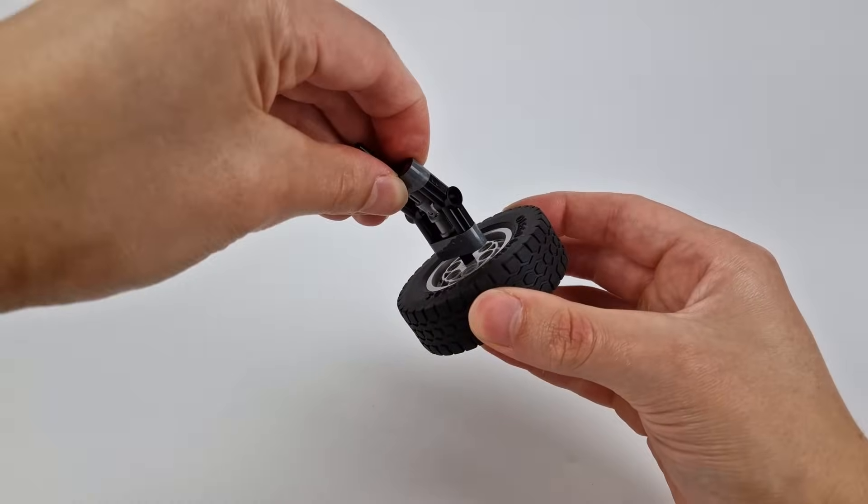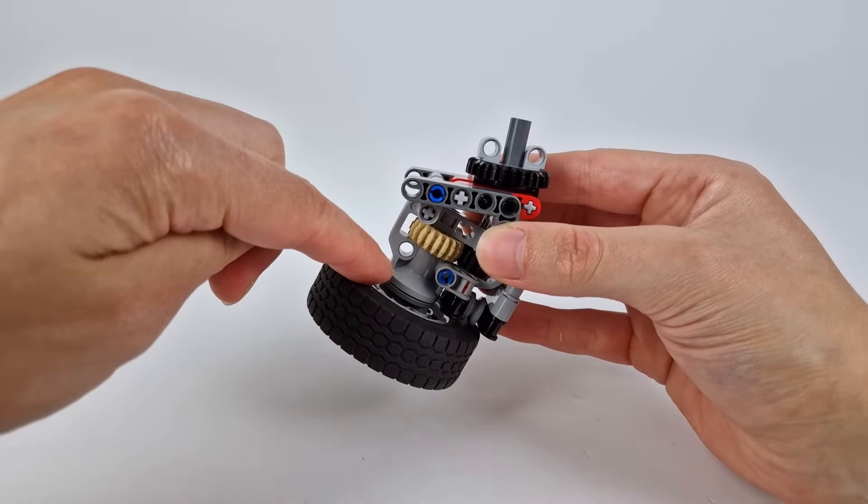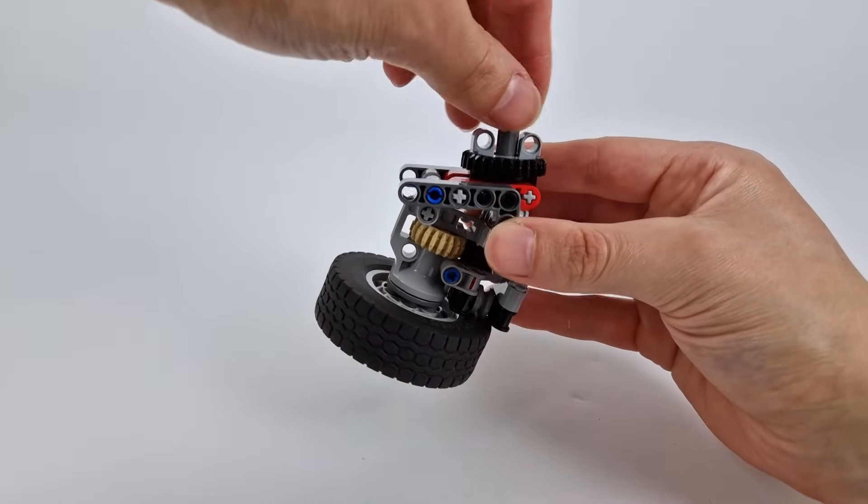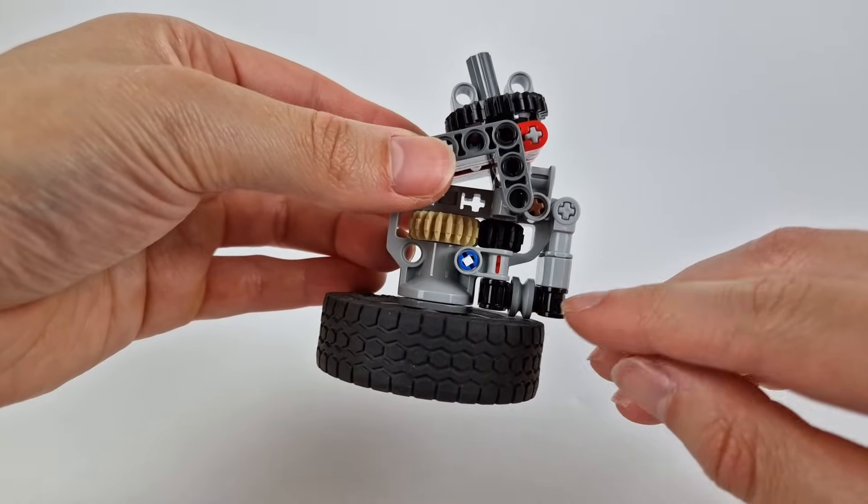This thing is nowhere near sturdy enough though, so this is what I came up with instead. It's much stronger thanks to this wheel hub piece, which also lets me gear down the wheels a bit, and it's got a small roller to bear some of the weight from the tire.